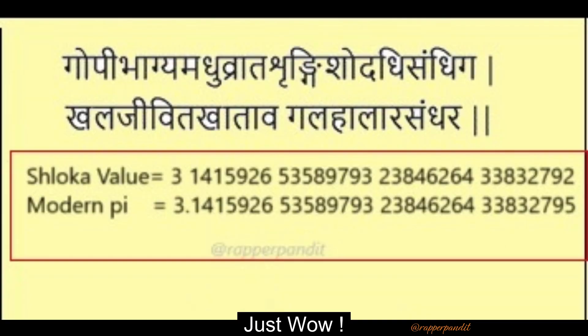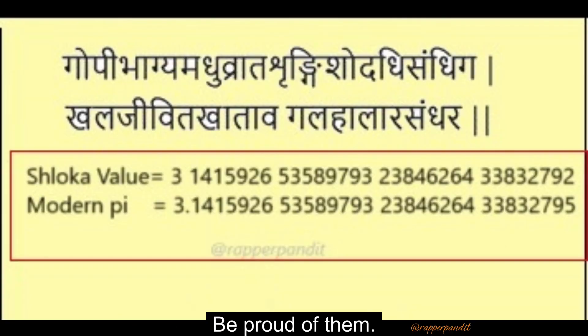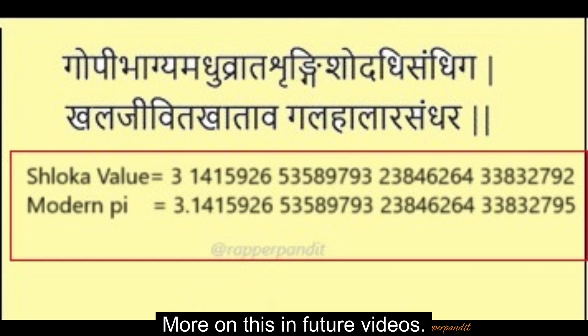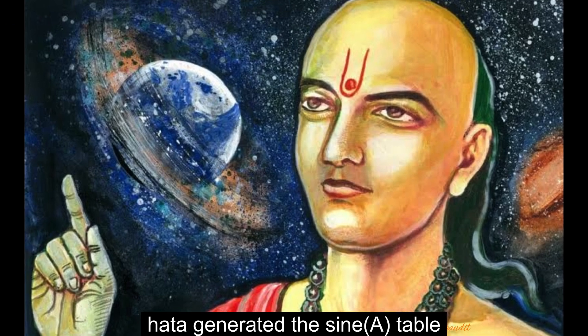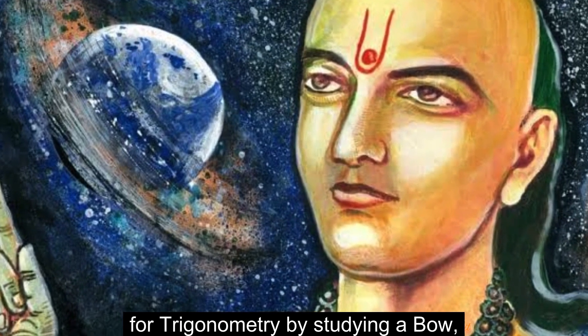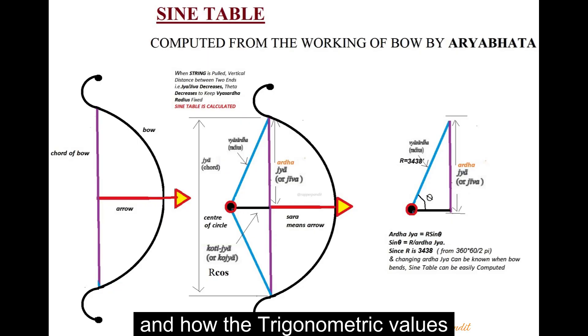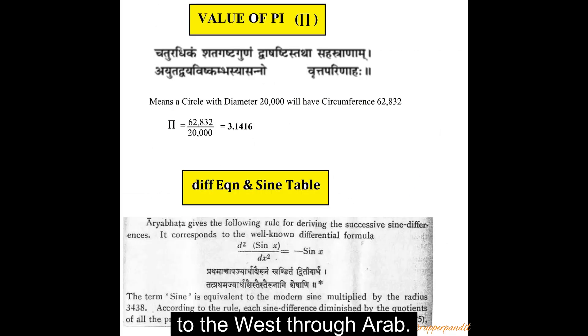Wow, just wow. Think how great our ancestors were — be proud of them. More on this in future videos, leaving you with a thought of how Aryabhata generated the sine table for trigonometry by studying a bone, and how the trigonometric values of sine and cosine travelled to the west through the Arabs. Thank you.